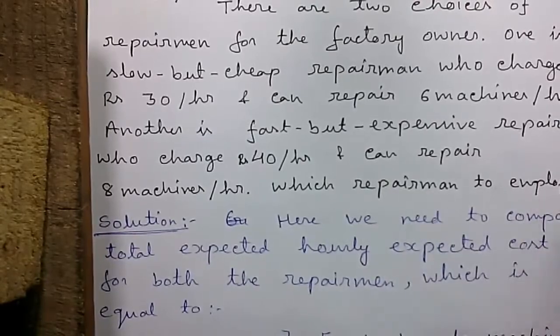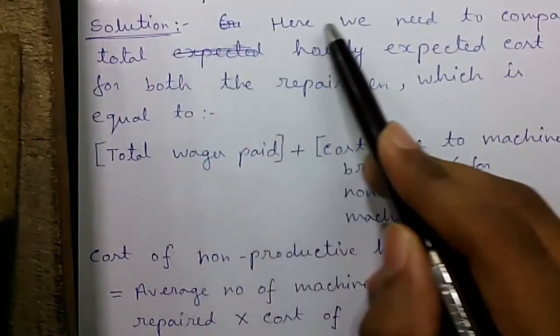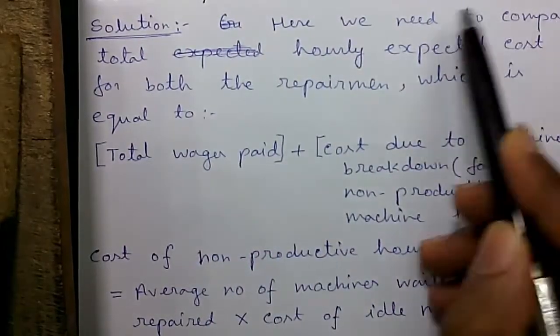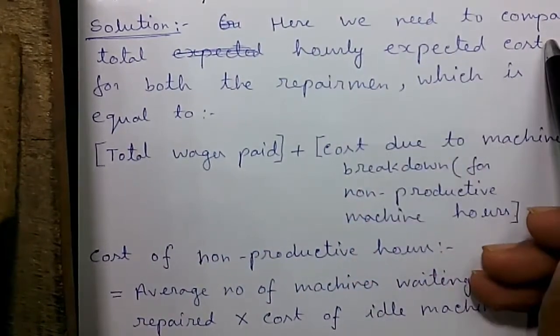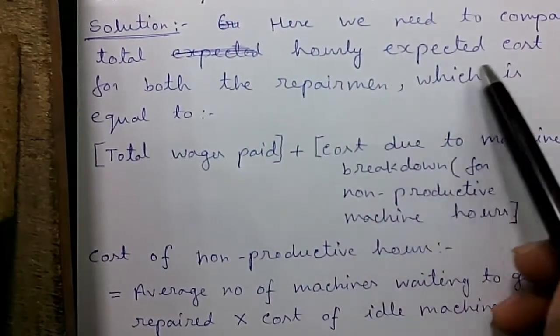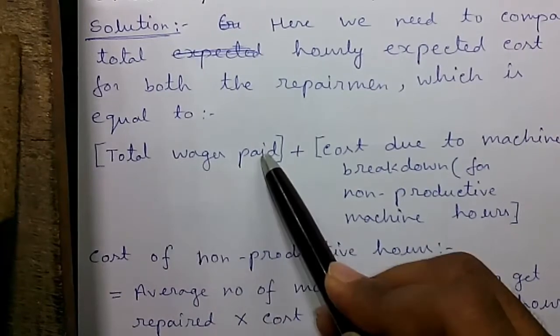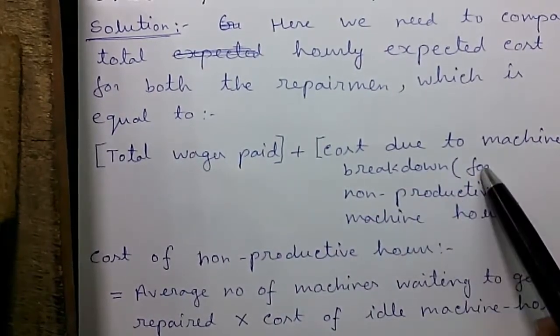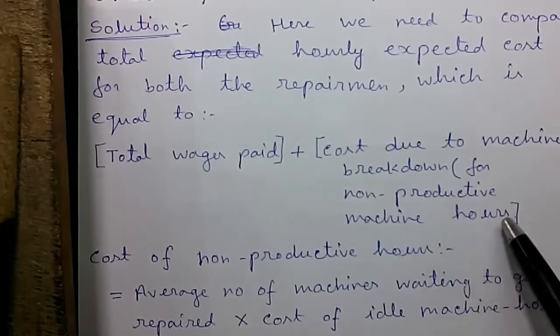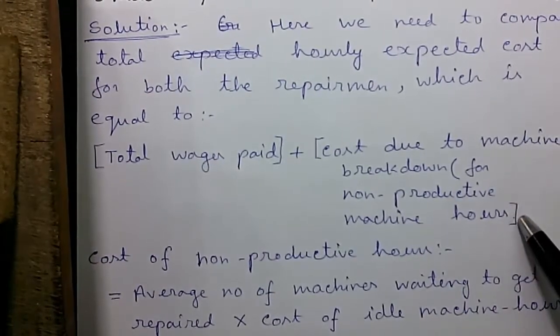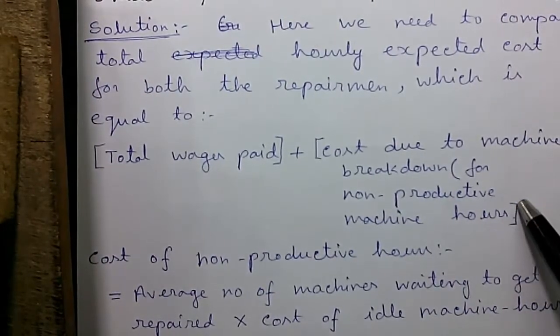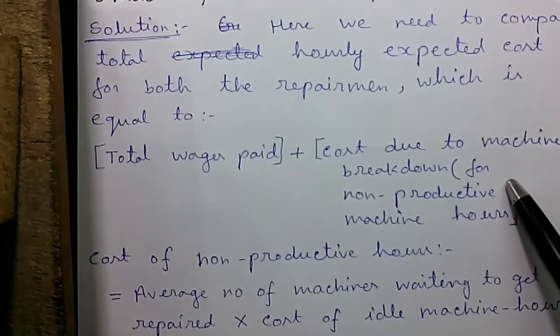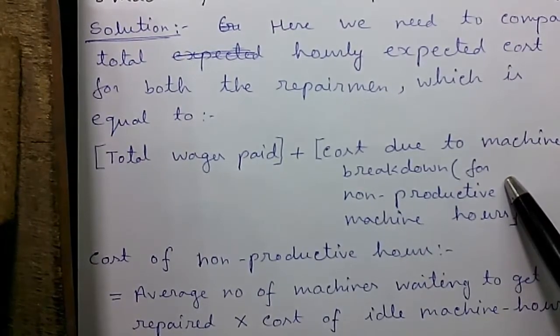Our question is which repairmen to employ. So let's proceed to the solution. Here we need to compare total hourly expected cost for both the repairmen which is equal to total wages paid plus cost due to machine breakdown for non-productive machine hour. For a breakdown of 1 hour for each machine it costs Rs 50 to the company.